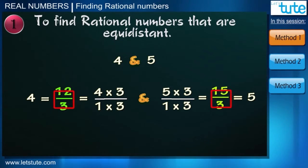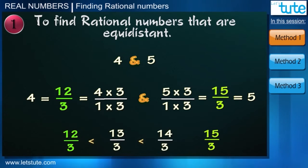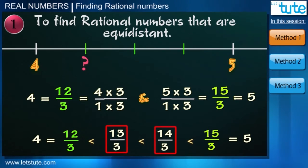We can now observe that the denominator of both the fractions is same that is 3. So we write the numerator in increasing order. And 13 by 3, 14 by 3 are the two rational numbers between 4 and 5. But here we have missed one thing. Can you guess what it is? We have found only two rational numbers instead of 3.